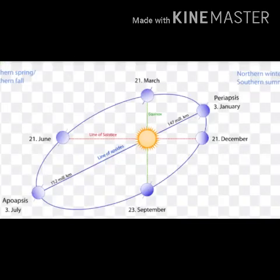The second effect of the revolution of the Earth is the variation in the distances between the Earth and the Sun. Due to the elliptical orbit, the distance between the Earth and the Sun is not constant. When the Earth is closest to the Sun, it is called Perihelion, which occurs on or about January 3rd. When the Earth is farthest from the Sun, it is called Aphelion, which occurs on or about July 4th.